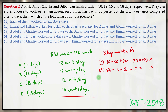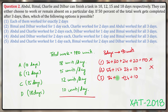For answer option 3: Abdul and Charlie worked for 2 days each — 18×2 = 36 and 12×2 = 24, giving 60. Dilber worked for 1 day and Bimal worked for all 3 days. Bimal's 3-day work gives a units digit that doesn't result in 90, so this option is also not correct.